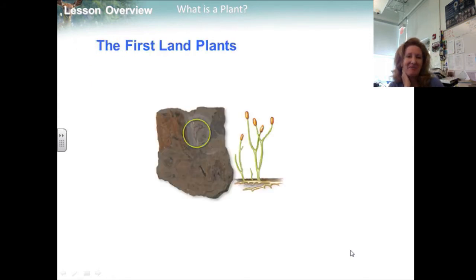The greatest challenge that early land plants faced was obtaining water. They met this challenge by growing close to the ground in damp locations. Fossils suggest the first true plants were dependent on water to complete their life cycles. And one of the earliest fossil vascular plants was cooksonia, shown here.